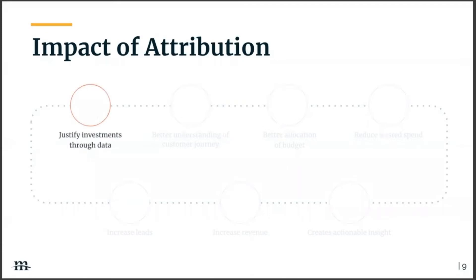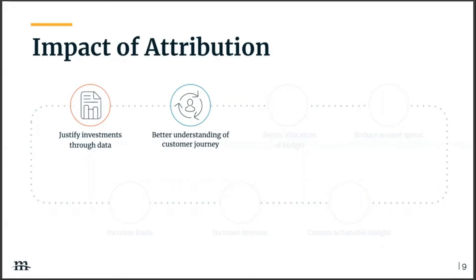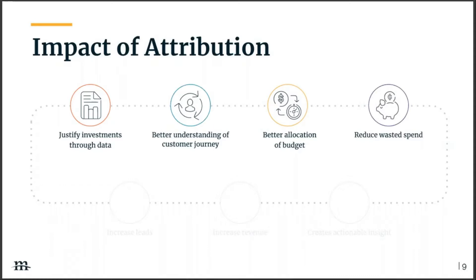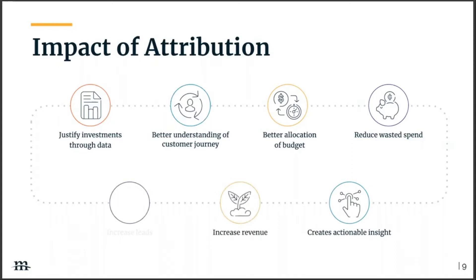In order to gain a better understanding of your marketing ROI, you need a means of measuring success — and we as marketers know this as attribution. Attribution helps you justify investments through data, so you know where and when to make changes. It gives you a better understanding of the customer journey and the intricacies of your customers. It also gives you better allocation of budget, reduces wasted spend, creates actionable insights, increases lead quality, and ultimately helps marketers make fact-based decisions and realize greater returns on marketing investments.